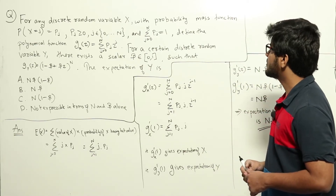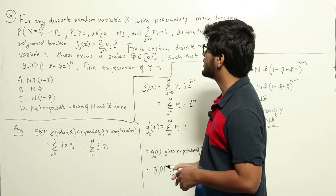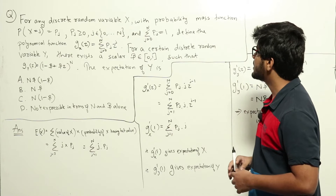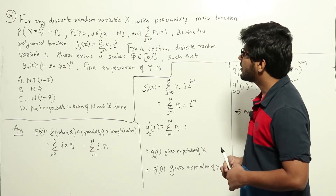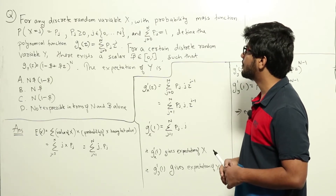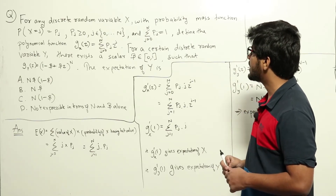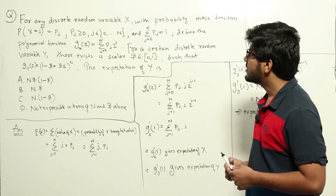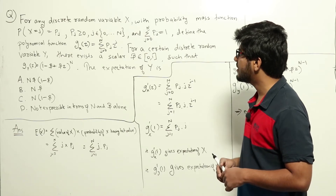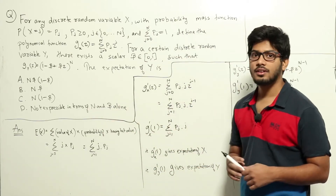For any discrete random variable x with probability mass function p(x = j) = p(j), where p(j) ≥ 0, j belongs to 0 to n, and the sum from j=0 to n of p(j) equals 1, define the polynomial function g_x(z) = sum from j=0 to n of p(j) * z^j. For a certain discrete random variable y, there exists a scalar β ∈ (0,1) such that g_y(z) = (1 - β + βz)^n. Find the expectation of y.